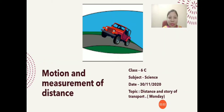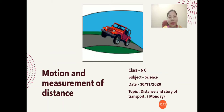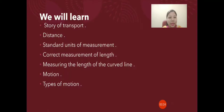Good morning, dear students. Welcome to today's science class. We have already completed the chapter 'The Living Organisms: Characteristics and Habitats.' So today we are going to begin a new chapter. The name of the chapter is 'Motion and Measurement of Distance.' We are going to take up the topic of distance and the story of transport in today's class.